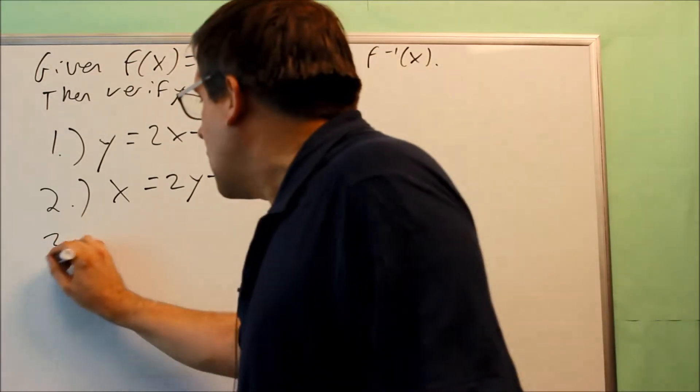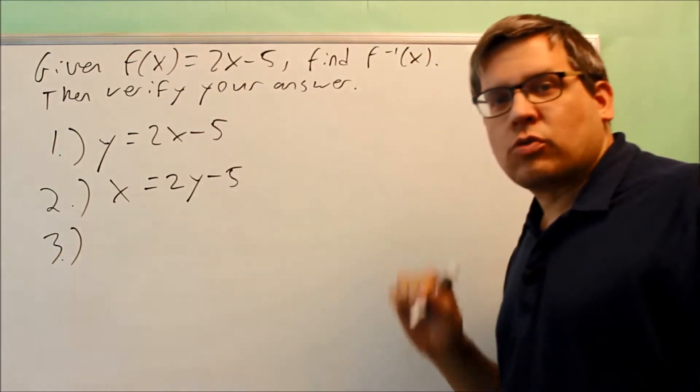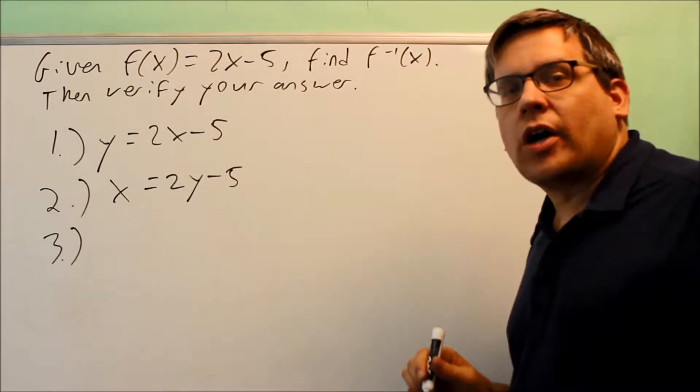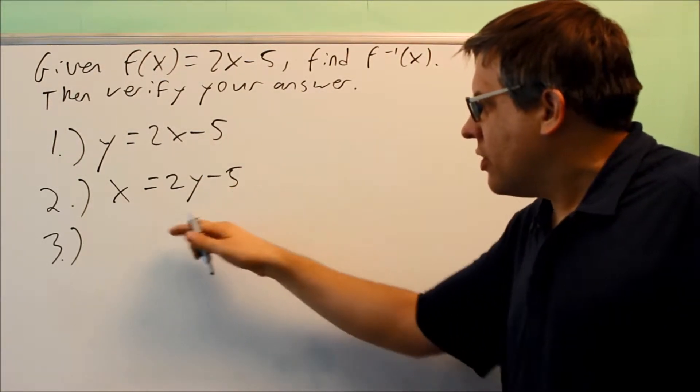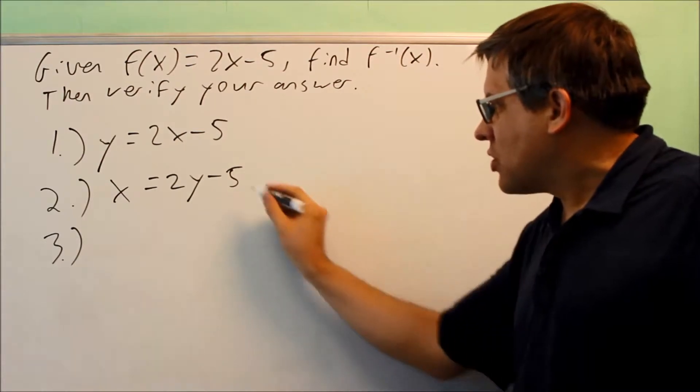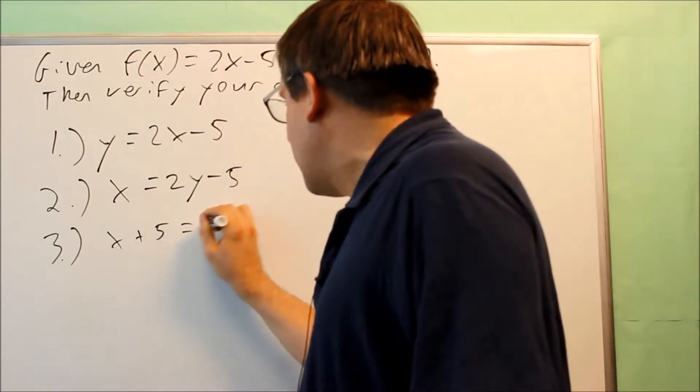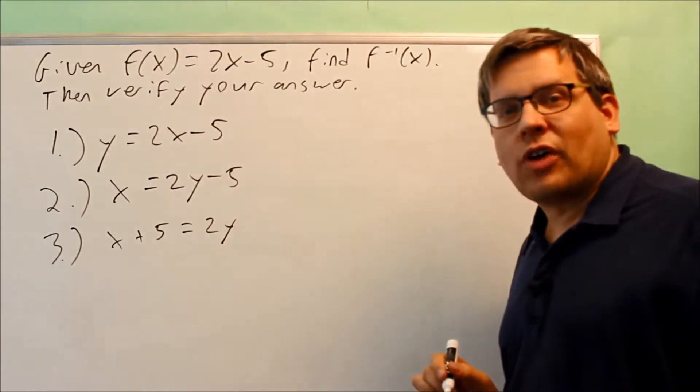Number three is the step that requires the most amount of work, and that's where you actually solve for y. Now that we've switched it, it's not solved for y anymore. So what we need to do is add 5 to both sides. So if I move the negative across the equal sign, it becomes positive,